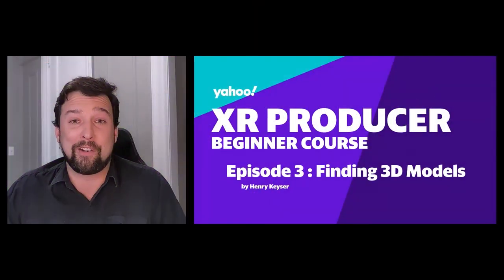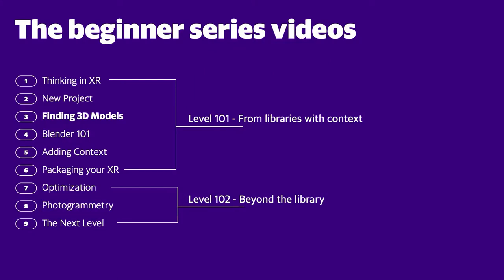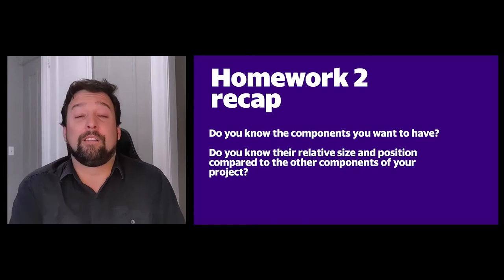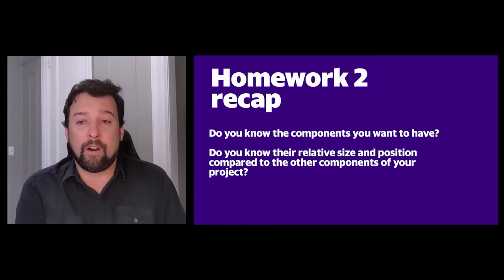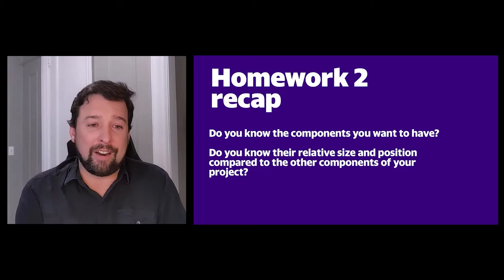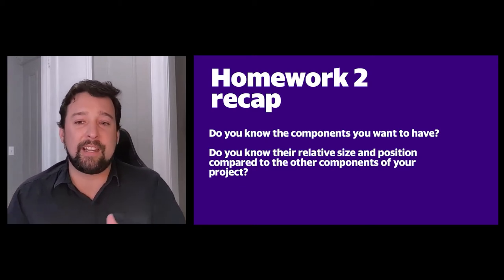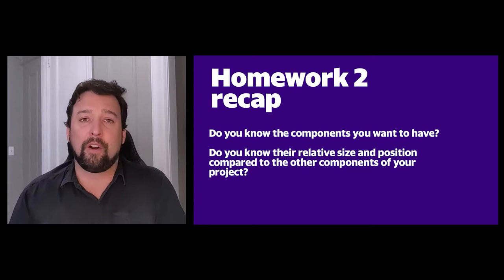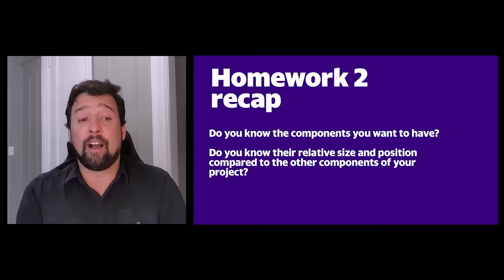I'm really happy to walk you through this next step. In episodes one and two we talked about how you start thinking about your project and how you go from a vision to breaking it into executable steps. One of those early steps was listing your 3D assets, because once you've got a list you know what you're going to be looking for. Your homework in the last episode was to take that vision and identify the likely components you need to search for in order to put your product together, and also to understand their relative size and position compared to each other and potentially to your user.